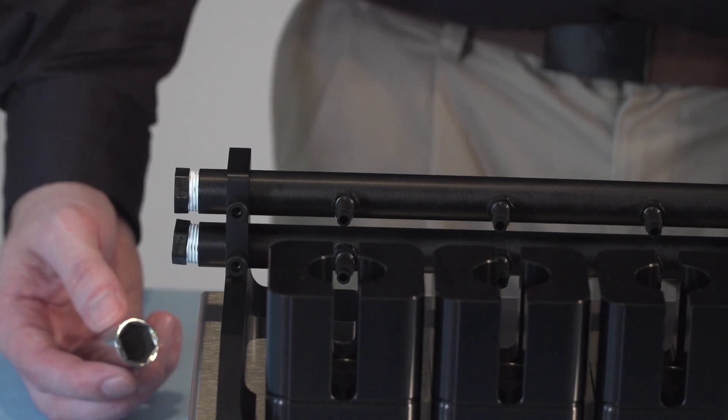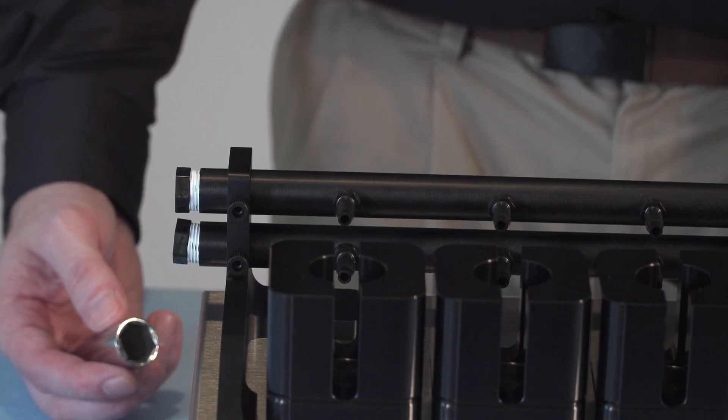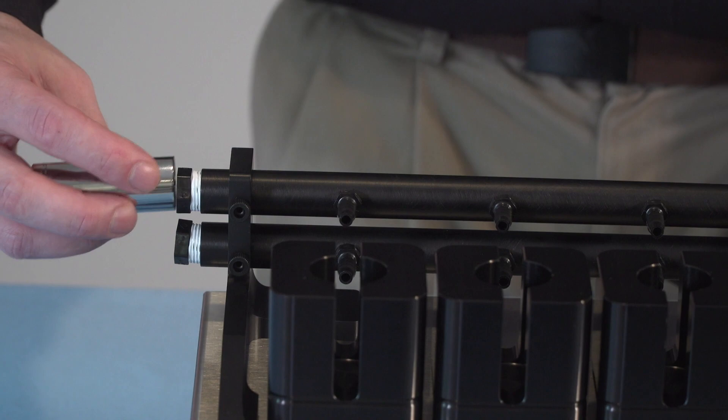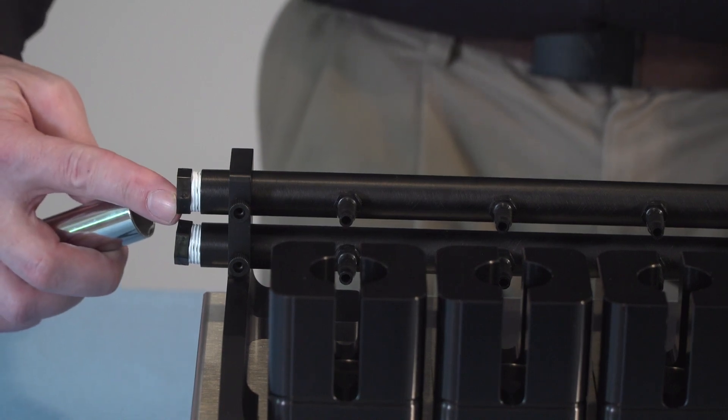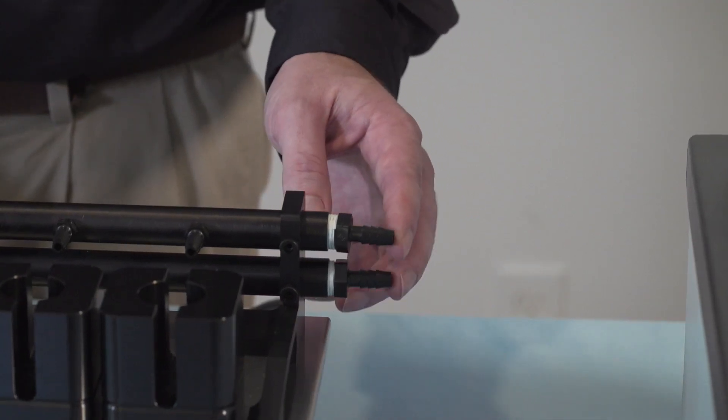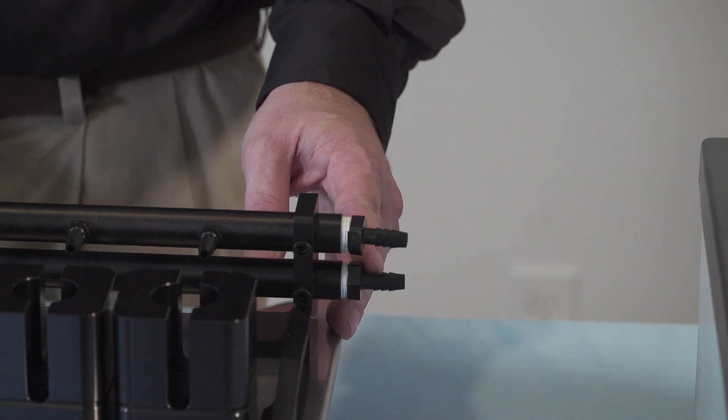If a circulating water bath is going to be connected, install the plugs into the side of the manifold opposite of the water bath. Install the barbed fittings into the side closest to the water bath.